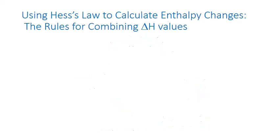So we can use Hess's law to calculate enthalpy changes for any reaction. We just have to find several reactions with known enthalpy values that we can add together as individual steps to give us our final reaction, and then add the enthalpy values together to give us our final enthalpy. Sometimes we need to rearrange our equations to get them to add together correctly, so there are several rules that we have to follow.